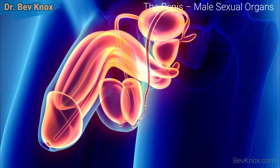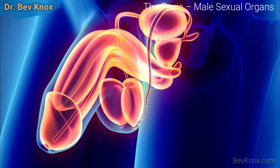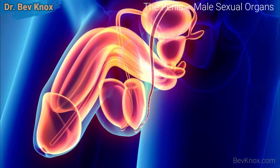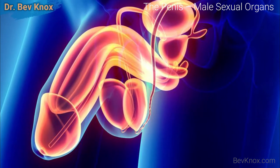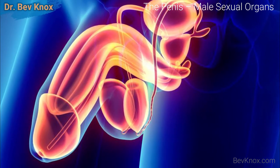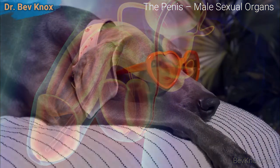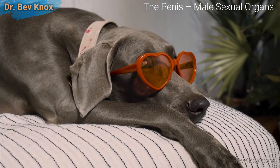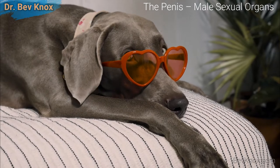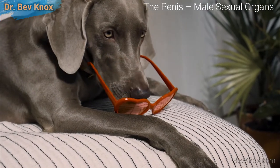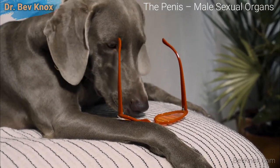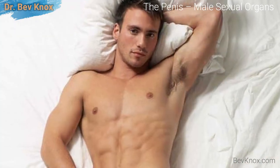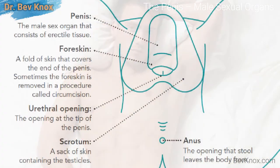Erection is purely a vascular phenomenon — it results entirely from blood flow. Some people believe that the penis of the human male contains a bone, but this is not true. Although in some other species, for example dogs, the penis does contain a bone which aids in intromission — the insertion of the penis into the vagina — in human males there is none.